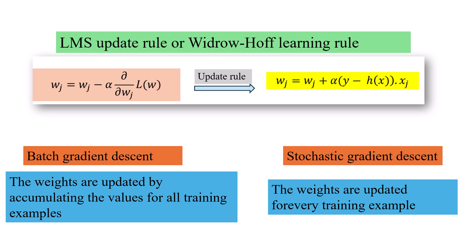The rule and how we use it we could do it in terms of batch gradient descent or stochastic gradient descent. In the batch gradient descent we update the weights by accumulating the values for all training examples. We will do problems considering this approach in our future videos. And we have the stochastic gradient descent where the weights are updated for every training example.